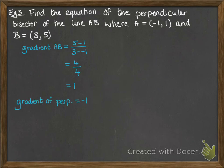Now, the perpendicular bisector will go through the midpoint. So, we need to find the midpoint of AB. Halfway between minus 1 and 3 is 1, and halfway between 1 and 5 is 3. So, midpoint is 1, 3.